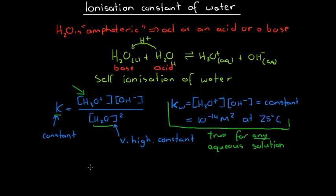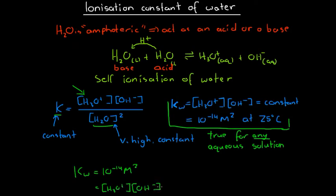So this is what's important: the ionization constant of water is equal to 1×10⁻¹⁴, and it equals the concentration of hydronium multiplied by the concentration of hydroxide. We're going to use this in a brief example.